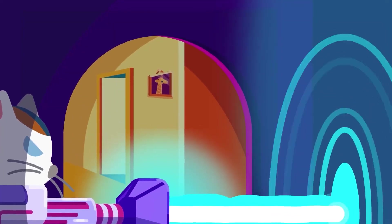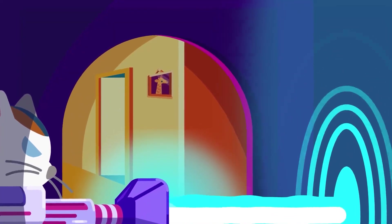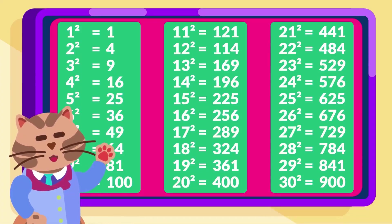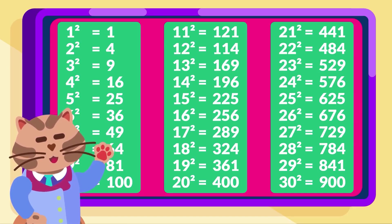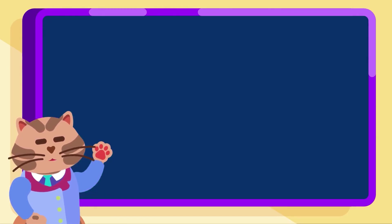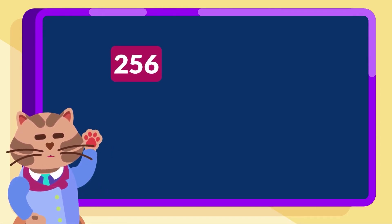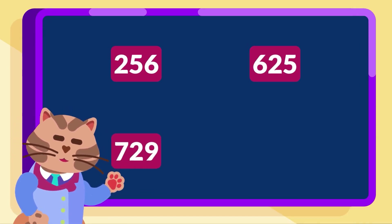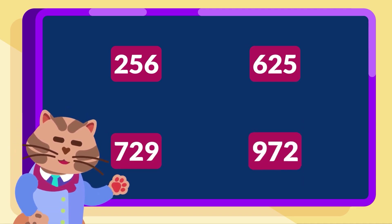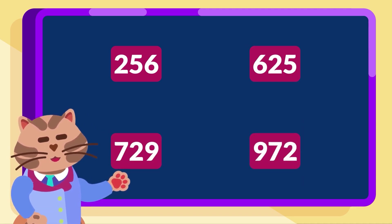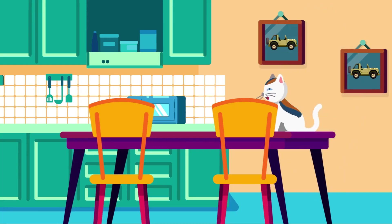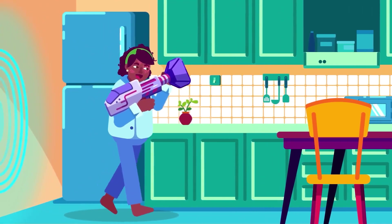Now, let's put your knowledge to the test. Can you quickly determine if the following numbers are perfect squares? 256, 625, 729, 972. Rely on the patterns we discussed earlier.